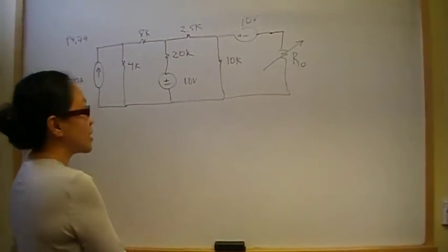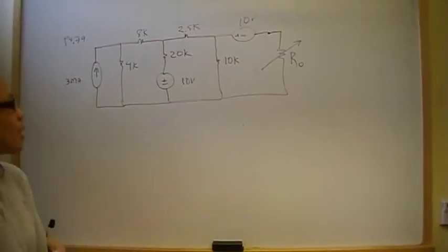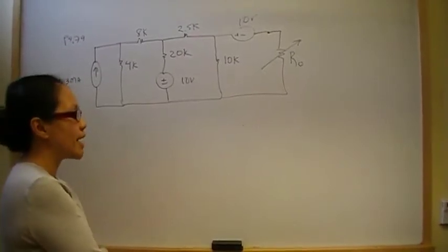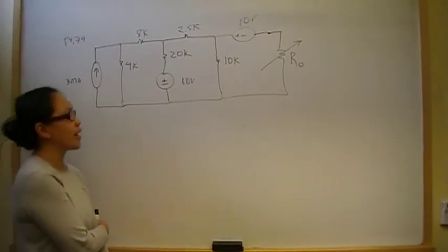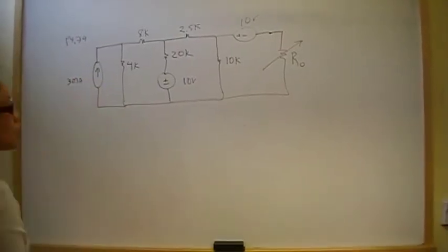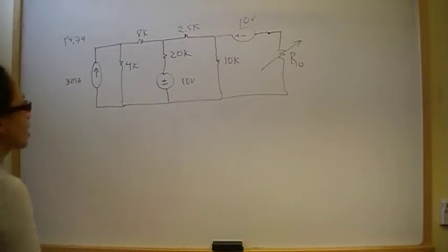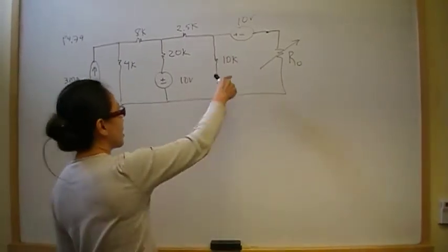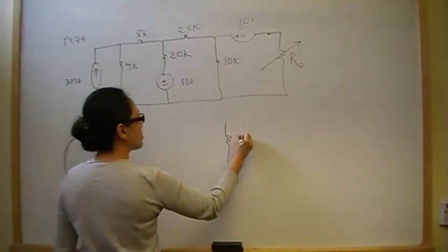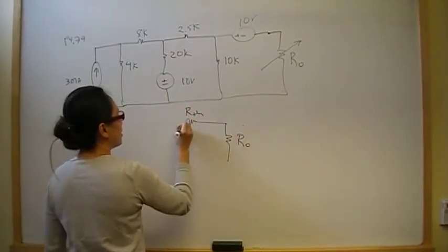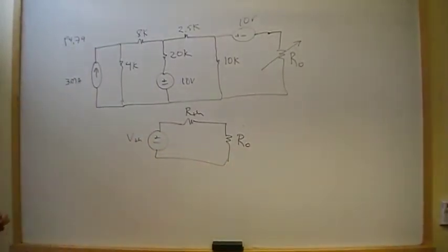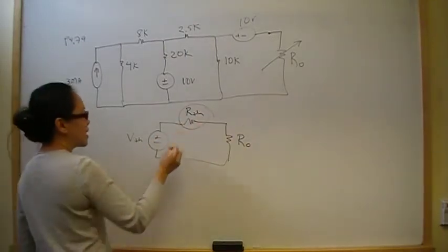A maximum power transfer problem basically translates into finding R-Thevenin and V-Thevenin, because when the value of the load exactly matches the Thevenin equivalent resistance, that's the maximum power that can be delivered to the load. So we're going to find the Thevenin resistance first.